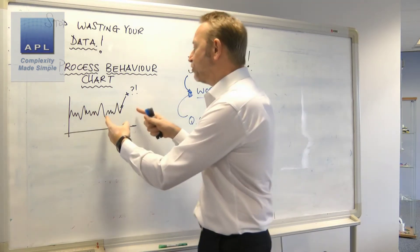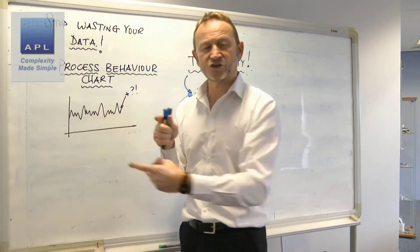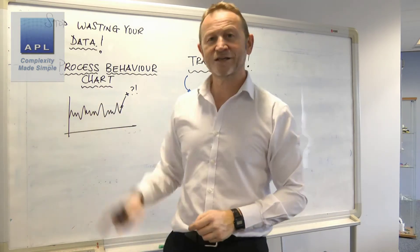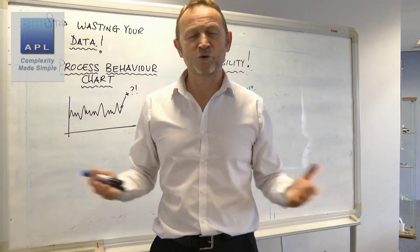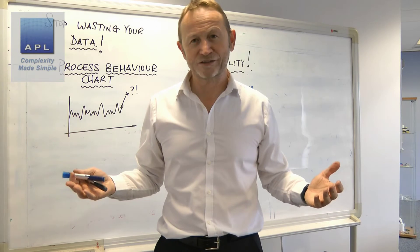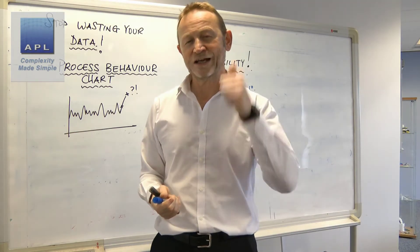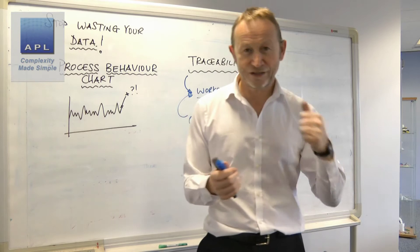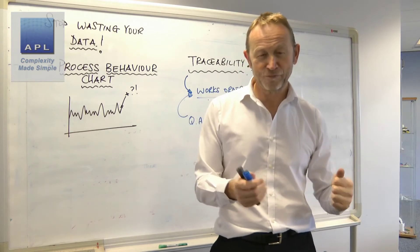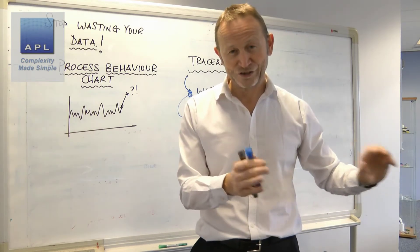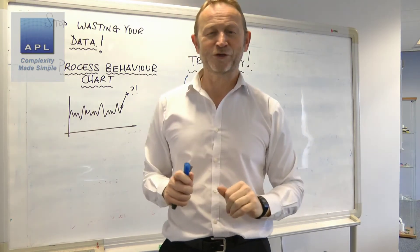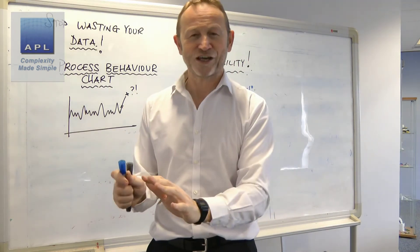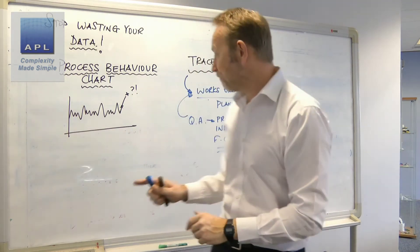This data should be available at the point of activity — available to the setter. It's gold dust data because it tells us the status and behavior of the process. But we don't allow the setter to have this data. Once he's collected a single data point, they take the sheet off him, scan it, save it on a computer, and he's not even allowed access to the files.